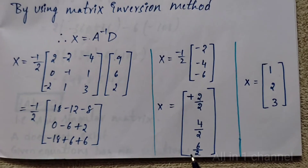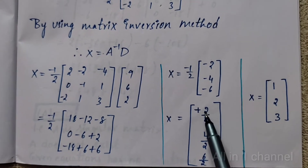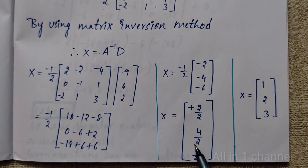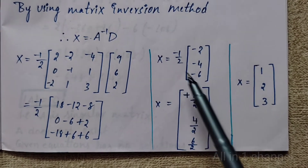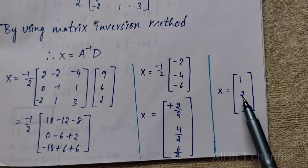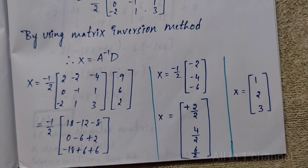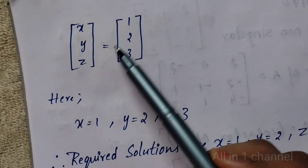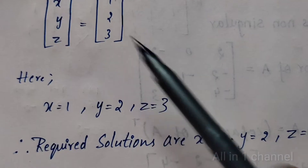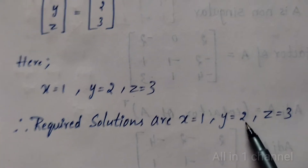X equals minus 1 by 2 times [minus 2, minus 4, minus 6]. Multiplying: minus 1 by 2 into minus 2 gives 2 by 2 = 1. Minus 1 by 2 into minus 4 gives 4 by 2 = 2. Minus 1 by 2 into minus 6 gives 6 by 2 = 3. Therefore [x, y, z] equals [1, 2, 3]. So x equals 1, y equals 2, z equals 3 are the required solutions.